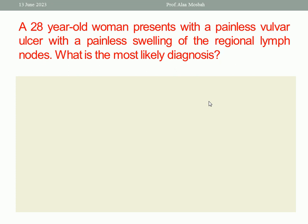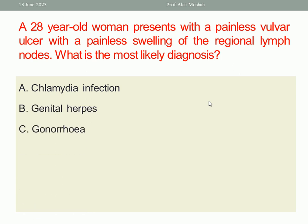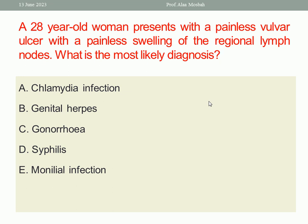Next: a 28-year-old woman presents with a painless vulvar ulcer and painless swelling of the regional lymph nodes. What is the most likely diagnosis? A. Chlamydial infection. B. Genital herpes. C. Gonorrhea. D. Syphilis. E. Monilial infection. The one best response is D, Syphilis — characterized by a painless ulcer at the vulva and painless enlargement of the regional lymph nodes.